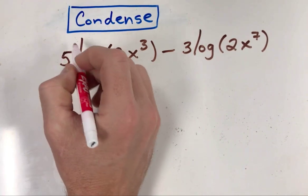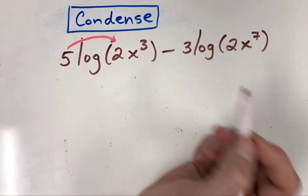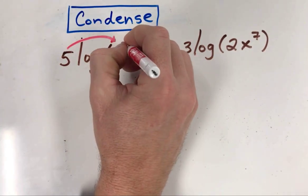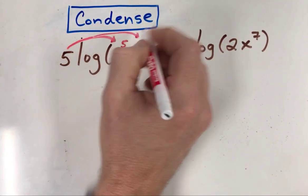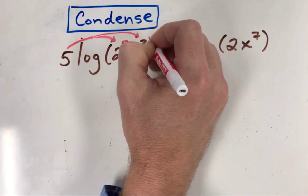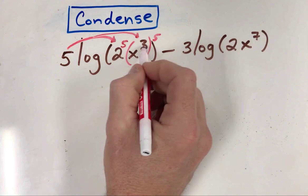The coefficient 5 becomes the exponent of everything inside. That means 2 becomes 2 to the fifth power. The next one already has an exponent, so you multiply those together: x to the third to the fifth power becomes x to the fifteenth.